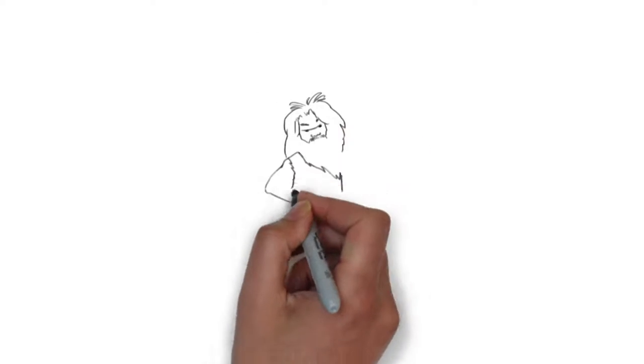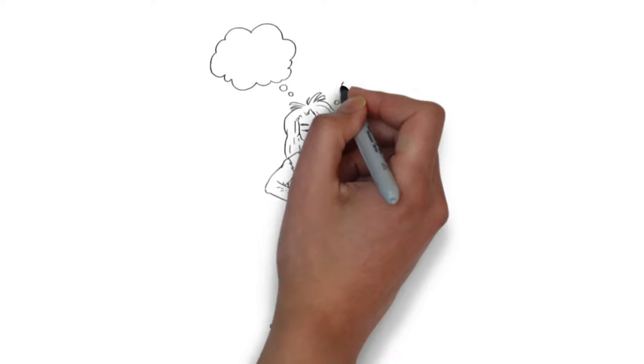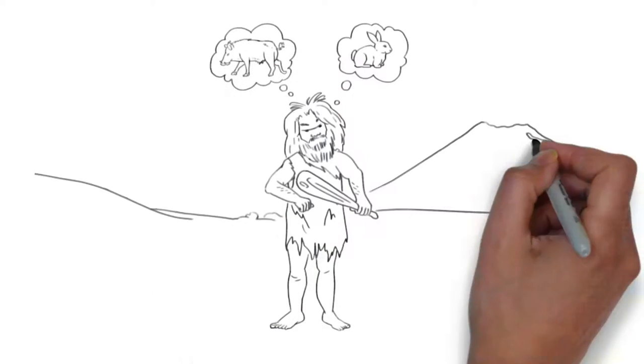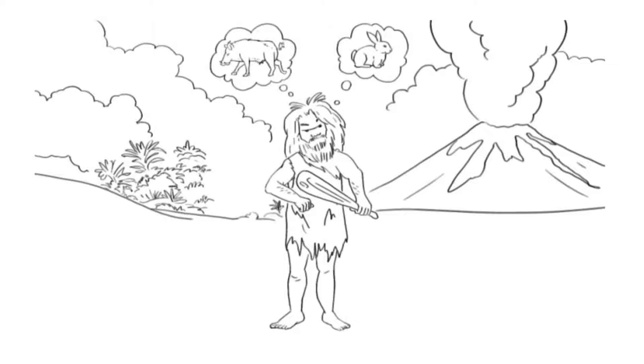So why are our genes the way they are? Here's our best explanation of why there are such high rates of obesity today. We evolved from our caveman ancestors. Back in the caveman days, food was pretty hard to come by. In order to survive, caveman brains were programmed to look for as much food as possible.